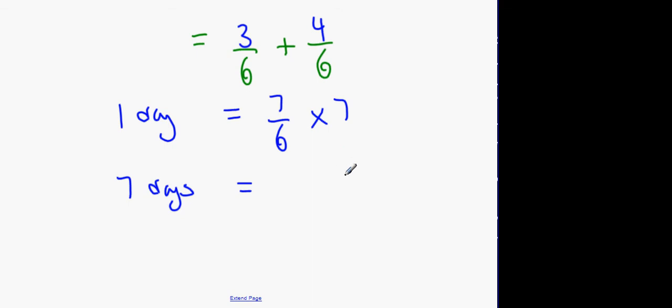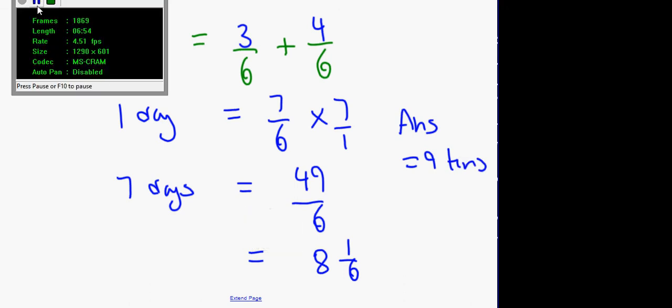This is for one day. I want to find out what seven days is. Seven days we multiply it by seven and what do we get? Seven over one, 49 over six. And 49 over six is eight and one sixth. You either have eight tins of food or you have nine tins of food. You can't buy a half a tin or a sixth of a tin, so the answer is nine tins.